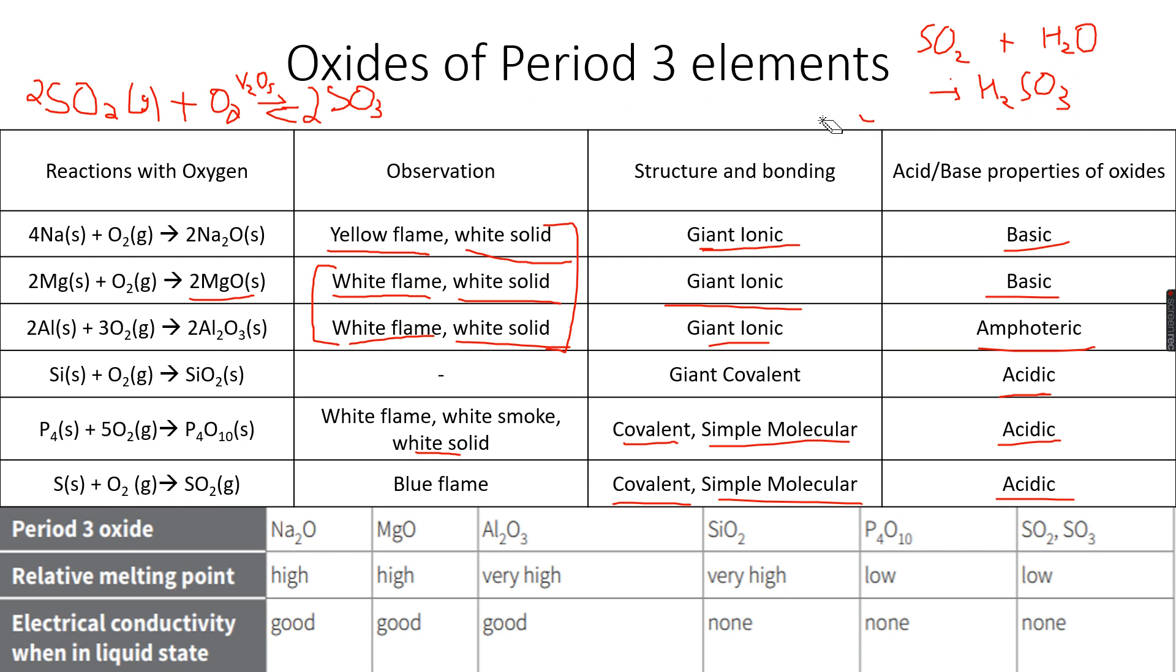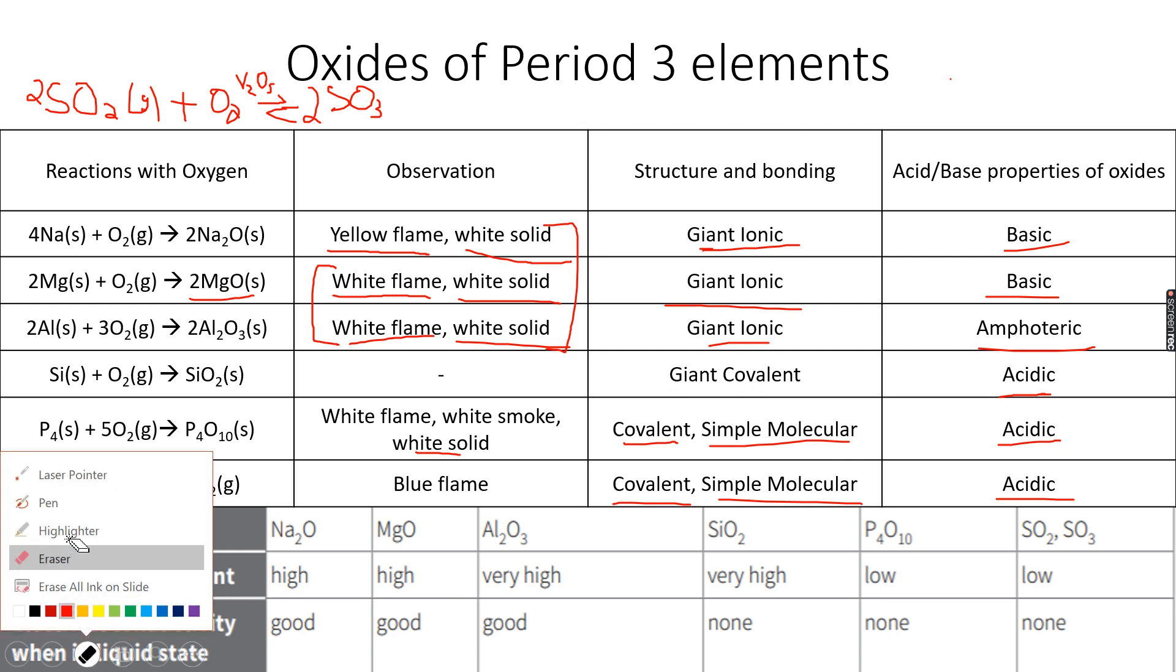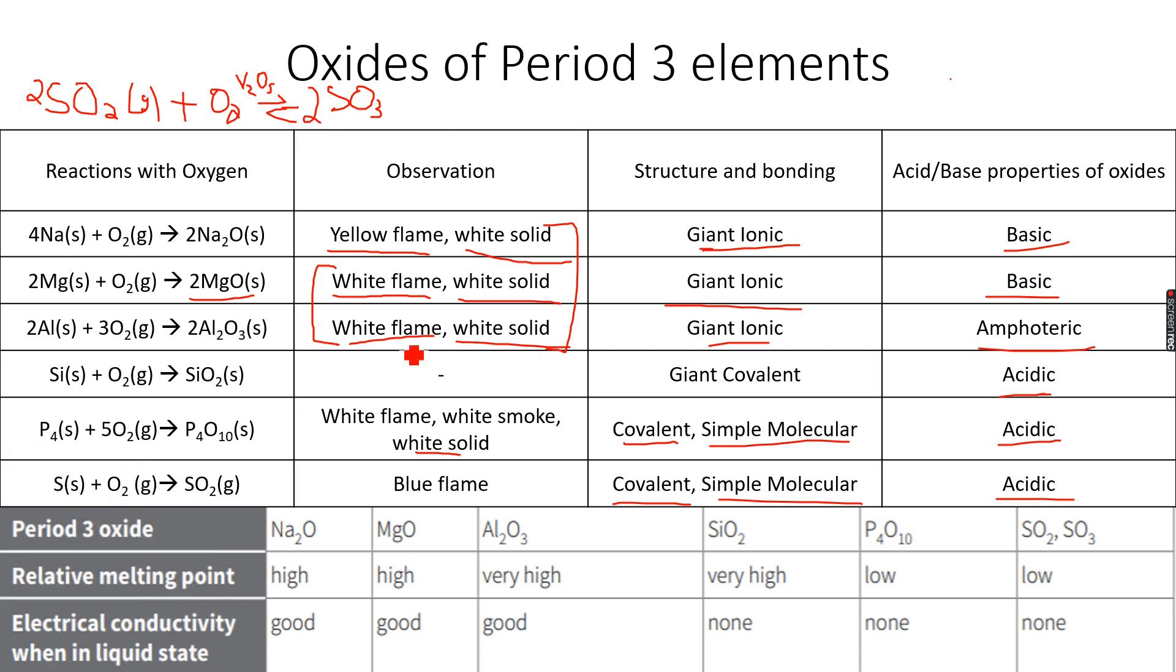Now let's see how aluminum oxide is amphoteric. When we react Al2O3 with an acid, let's take HCl as an example. When we react Al2O3 with HCl...